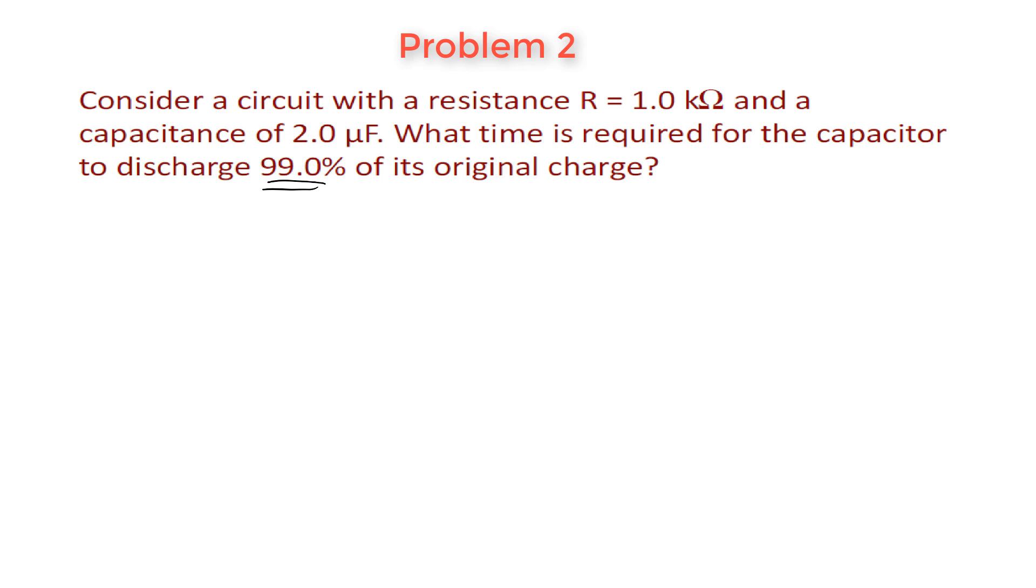So if you discharge 99% of the original charge, that means that the charge you're going to have left at some particular time is going to be 1% of the original charge. You're going to have 1% of Q0 left. Now they don't tell you what Q0 is, but that's okay. They tell you you're going to have 1% of Q0.